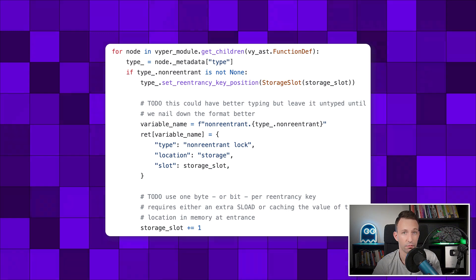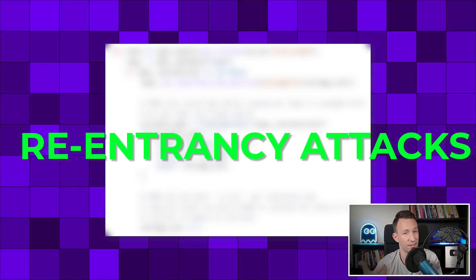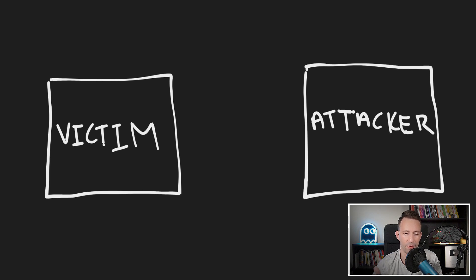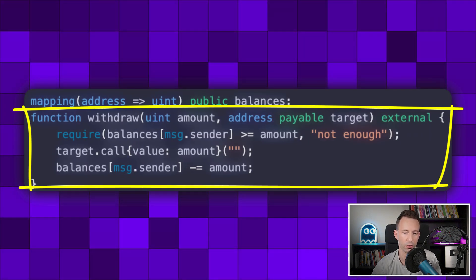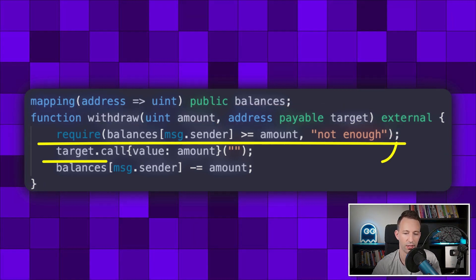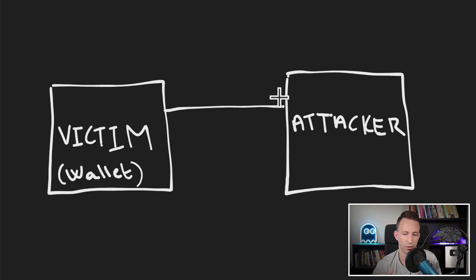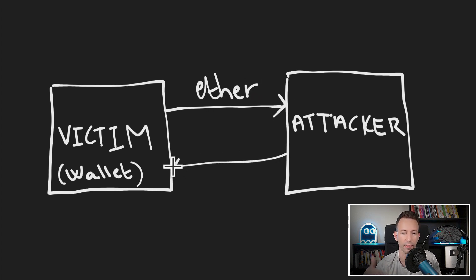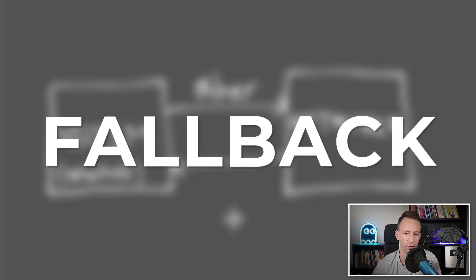To understand the problem, we need to understand reentrancy attacks. Consider a victim smart contract that is a wallet keeping some ether for different addresses, with a function to allow owners to withdraw their ether. First we check the owner has enough ether, then we send the ether, then we decrease the balance. When we send ether to another address, that address can be another smart contract, which can react to the incoming transfer with a special function called a fallback.